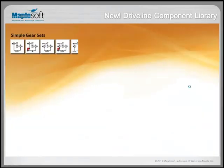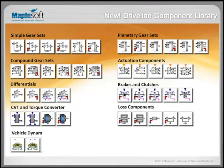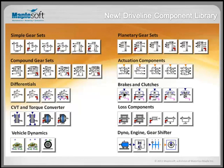Dr. Vahid introduces the new Driveline Component Library. As shown, MapleSim has a number of libraries and component sets, and the Driveline Component Library has recently been added as an add-on. This library consists of a number of components dedicated to modeling simple gears, planetary gears, compound gears, differentials, brakes, torque converters, vehicle dynamics, a dynamometer, engine, and gear shifter. These components cover the whole driveline from engine to tires for modeling various aspects of the system.